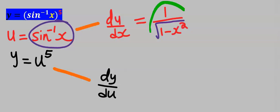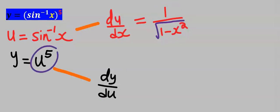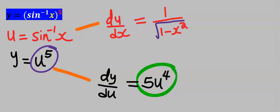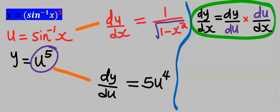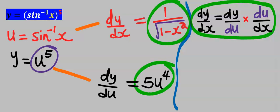Next differentiate sine inverse of x to get du/dx. Then differentiate u to the power of 5 to get 5u to the power of 4. Next apply the chain rule formula to find dy/dx — we multiply these two results.